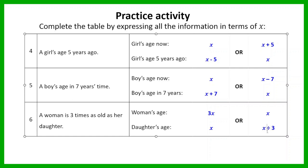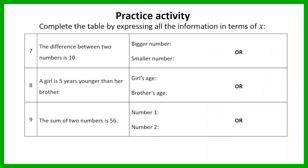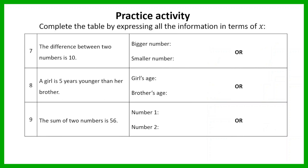If you made the woman's age x, the daughter's age would be x over 3 — a fraction — which is better to avoid. So I recommend making the daughter's age x and the woman's age 3x. That's what you're going to use when setting up equations to solve word problems.